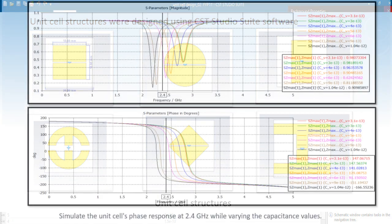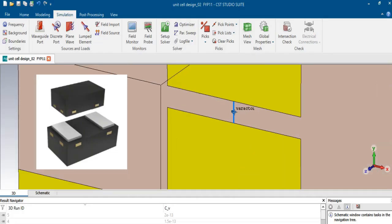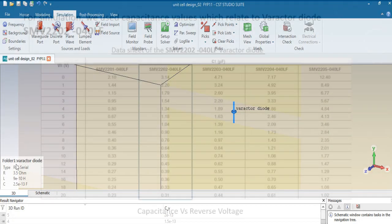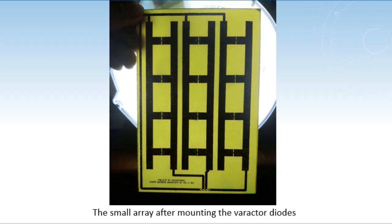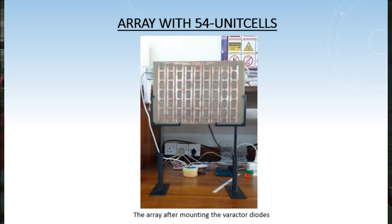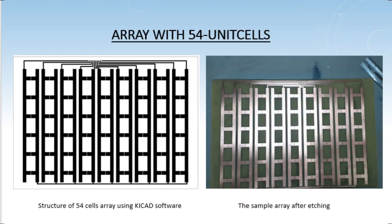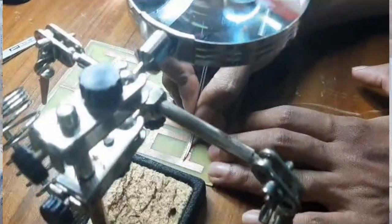This involves altering substrate material, thickness, unit cell spacing, and introducing a varactor diode to connect resonators. Once we've found the optimum structure at the 2.4 GHz frequency, we move from the digital realm to the physical world. The unit cell array is connected in a column-wise fashion, creating a structure of 54 cells array using KeyCodd software. After etching and mounting the varactor diodes, the IRS is ready for testing.